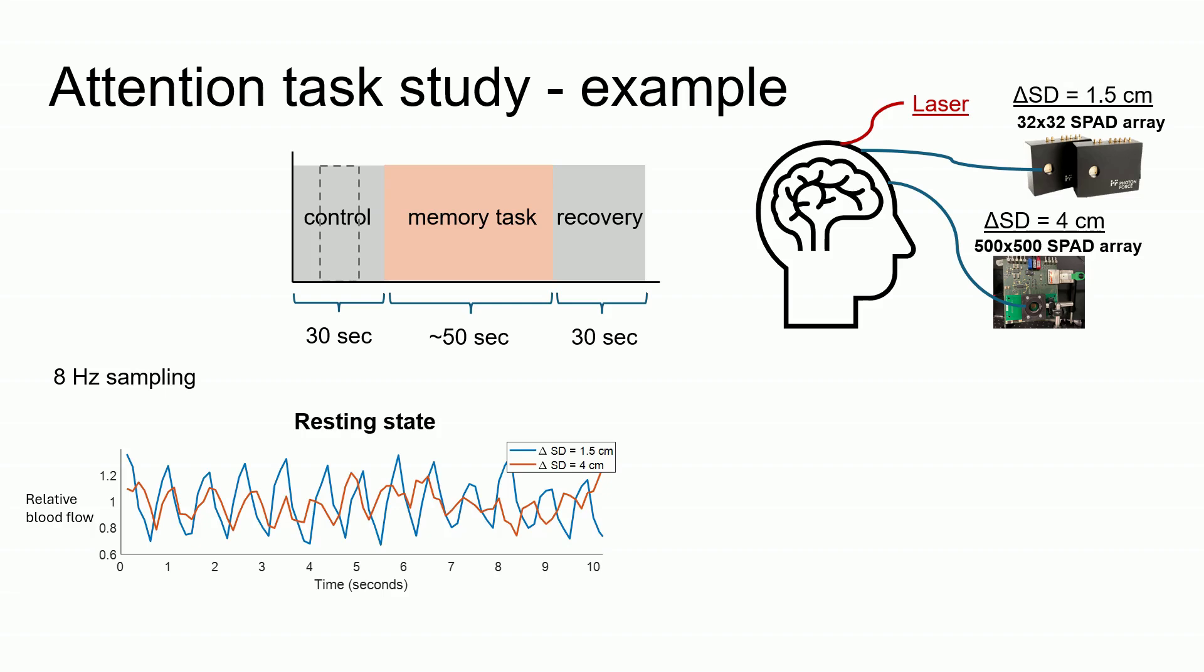This first figure shows the normalized blood flow time course during the resting state for an example subject. And here we can see the pulse clearly visible in both the orange and the blue curve, which measure the brain and the scalp respectively.